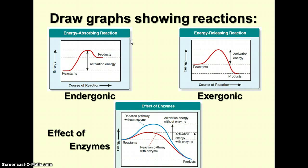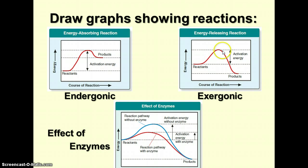You might have called this an endothermic reaction in the past. Endothermic reactions are a type of endergonic reaction, but endergonic refers to energy in general — specifically chemical energy in the form of ATP. In an exergonic reaction, the reactants start at a slightly higher energy level, are raised to the activation energy to start the reaction, and the products end up at a lower energy level than the reactants. These reactions give off or release energy, again in the form of ATP.